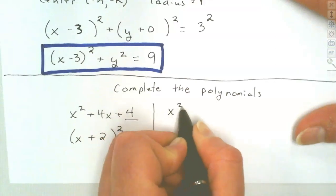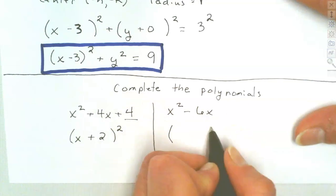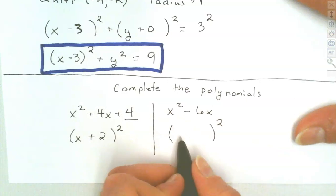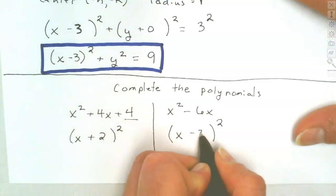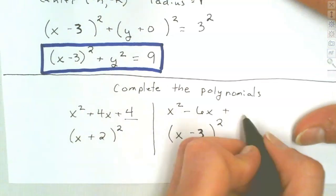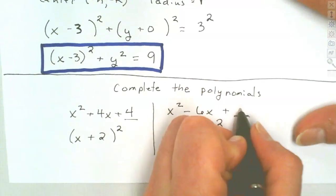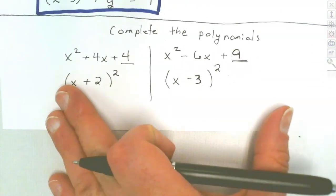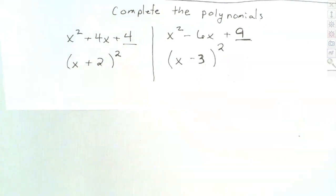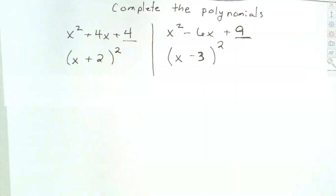How about x² - 6x? Half of negative 6 is negative 3, and negative 3 squared is 9. So we add 9 to make it factor. Remember: half the middle number, then square to get the number on the end.